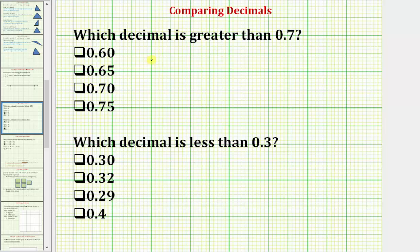In this first question, we're asked to determine which decimal is greater than 0.7. Notice all the choices here have two decimal places. So let's first start with the given decimal 0.7. If you write this as a fraction, 0.7 is equal to 7 tenths. But it's often easier to compare decimals if they have the same number of decimal places.